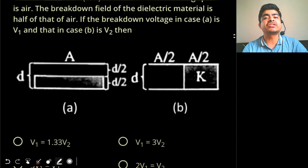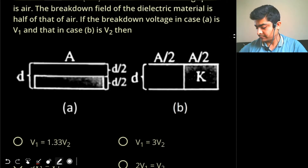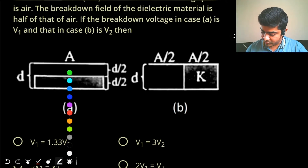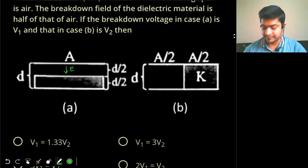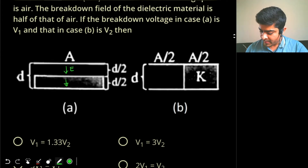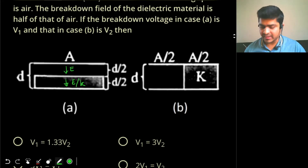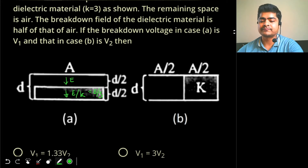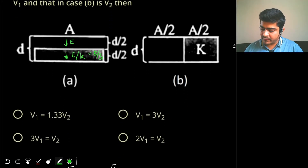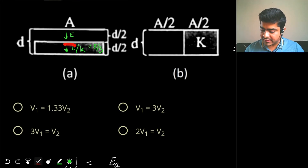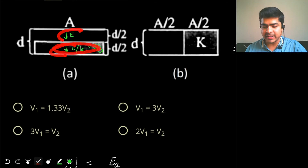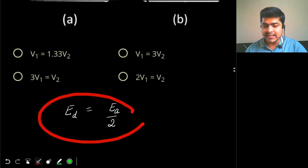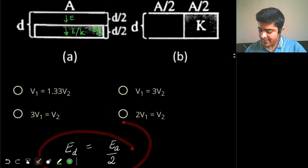The second hint is to check which material reaches the dielectric breakdown strength first. In case A, if the electric field in the air region is E, then the electric field inside the dielectric (assuming air has dielectric constant 1 and the dielectric has k = 3) will be E/3. Now compare these with the respective breakdown strengths: the dielectric breaks down at E_D and air breaks down at E_A.